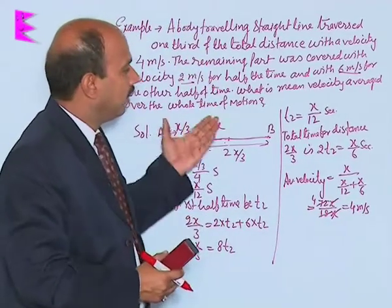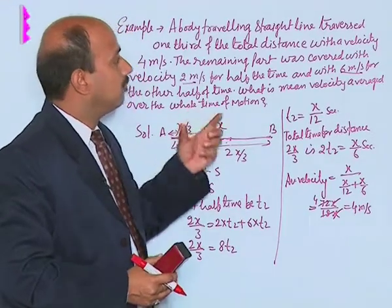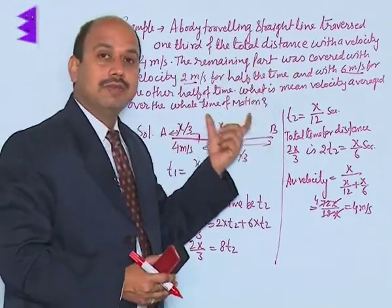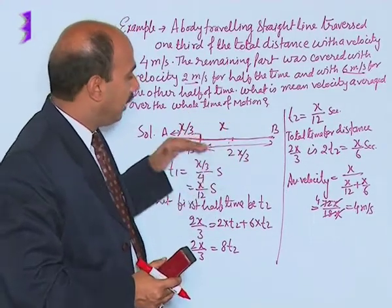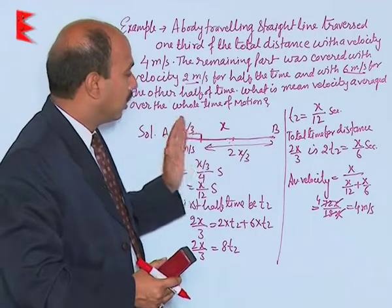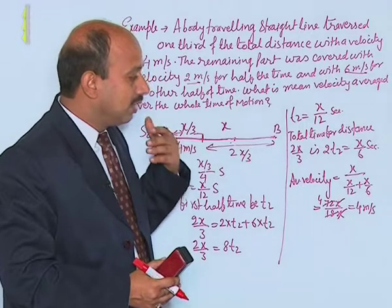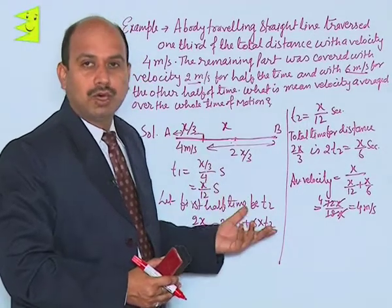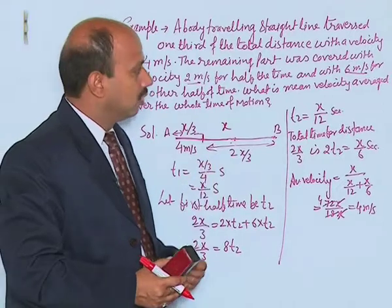So you can calculate average velocity by this way, but take care here. First you have to understand the question, each and every part of the line given in the question, and then you break up the question according to the given parts, and then you take all the steps properly. Do not try to directly jump to the direct formula so that you can get the direct answer. In that case you can commit mistakes.